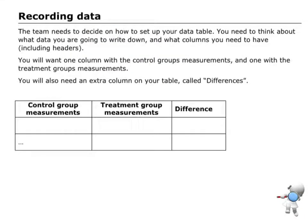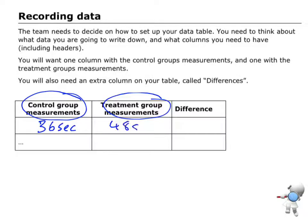The other thing I need to know is how I'm going to record my data. For paired data, I'm going to have two groups of data — my control group and my treatment group. If I was looking at the writing time for my dominant and non-dominant hand, I'd be writing down, say, 36 seconds here and 48 seconds there. Each row is one person, and each column refers to all the data in that category. Then I'm going to find the difference by subtracting those two.